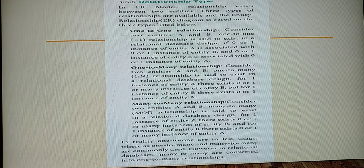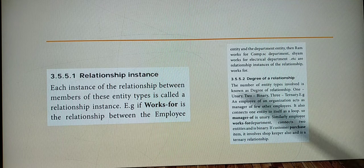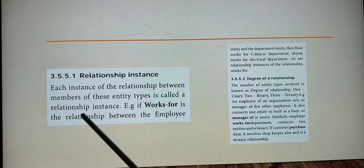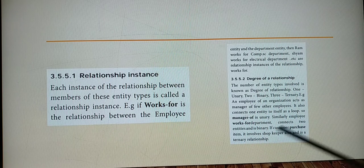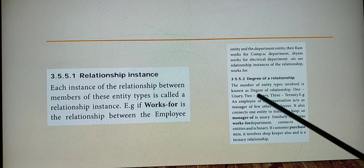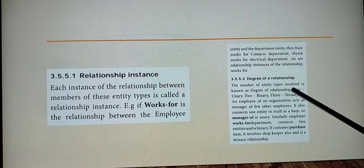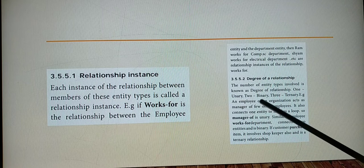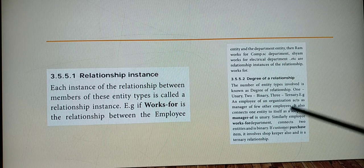A relationship instance is the value of the relationship between the members of entity types. The degree of relationship refers to the number of entity types involved. One entity is unary, two is binary, and three is ternary.